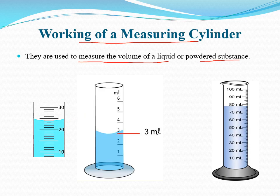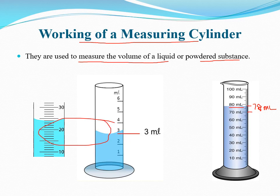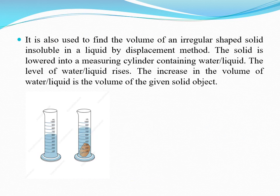Suppose we have put a color powder in a measuring cylinder. The surface of the powder is a straight one. The volume of this powder appears to be 78 ml, counting from 70, 71, 72, 73, 74, 75, 76, 78. This is how to find the volume of any liquid or powder with the help of the measuring cylinder. This is the second use of the measuring cylinder.